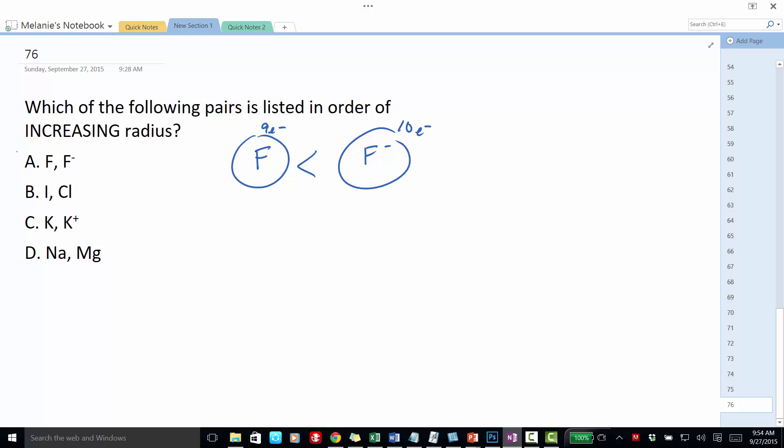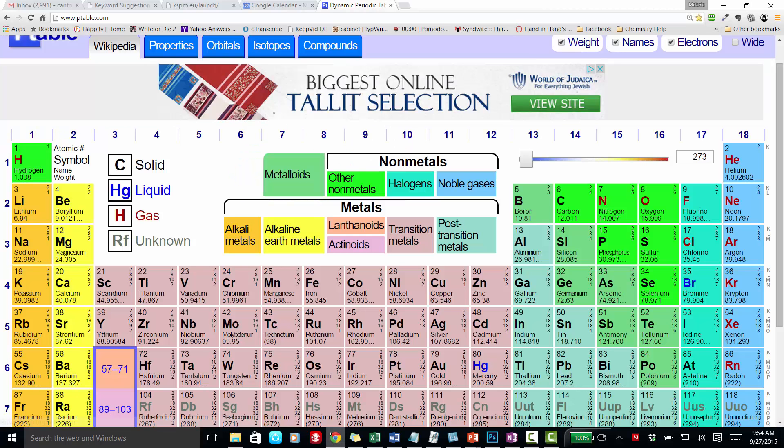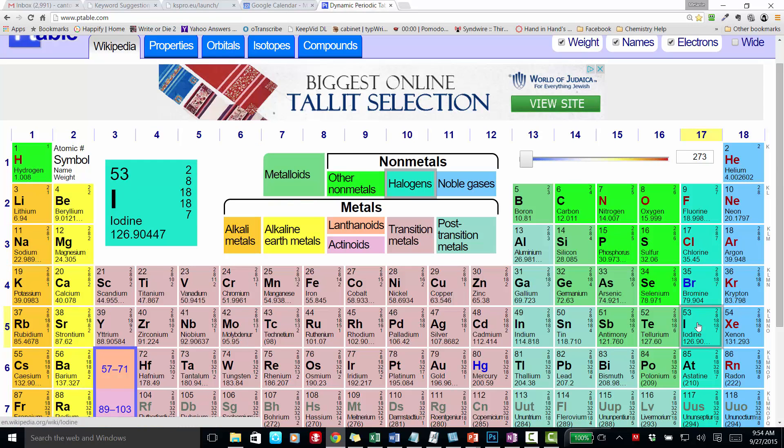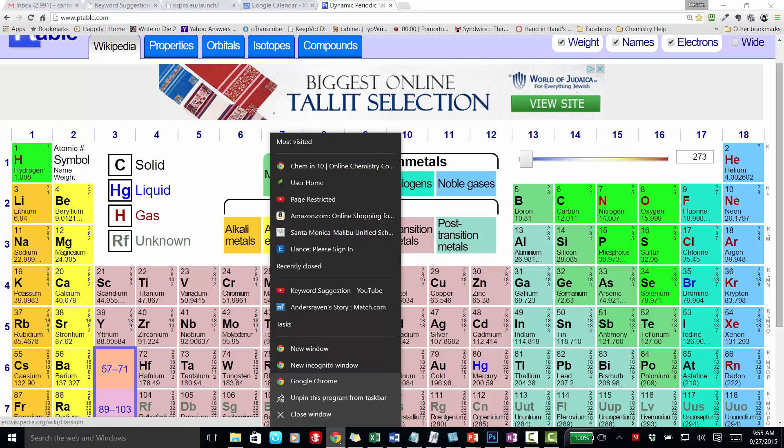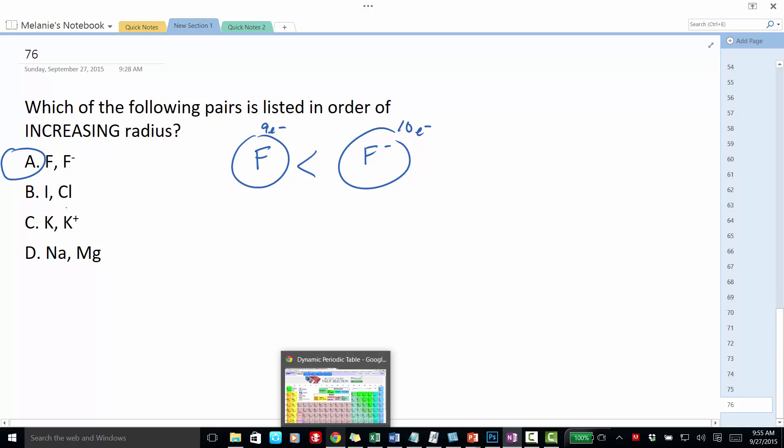So I like this one already, but let's look at iodine and chlorine. Iodine has its outermost electrons in the fifth energy level, whereas chlorine has its outermost electrons in the third energy level. So since there are more energy levels, iodine is necessarily going to be larger than chlorine, and so chlorine will not be larger than iodine.